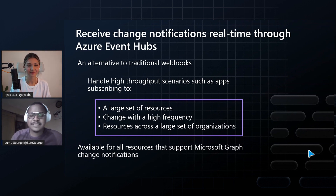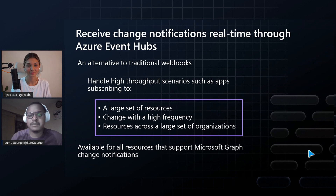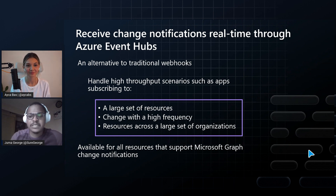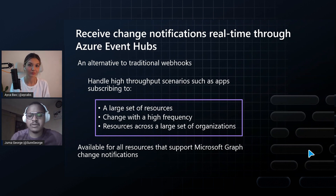So how can we get started? You can get started in two main steps. The first step is you will need to create an Azure Event Hub. Once you create an Azure Event Hub, you need to take note of the Event Hub connection string because you'll use it later. The second step is you will need to create an Azure Key Vault. The Azure Key Vault secures your connection string. You will get the connection string from Azure Event Hubs and load it into the Azure Key Vault. Then you will use the Azure Key Vault as your notification URL where you'll be able to receive notifications.